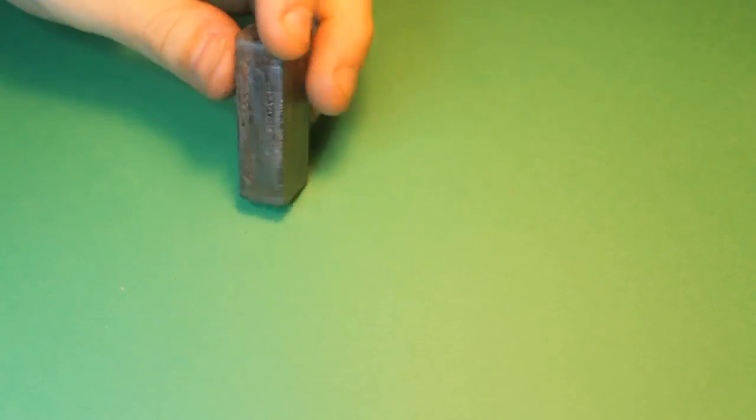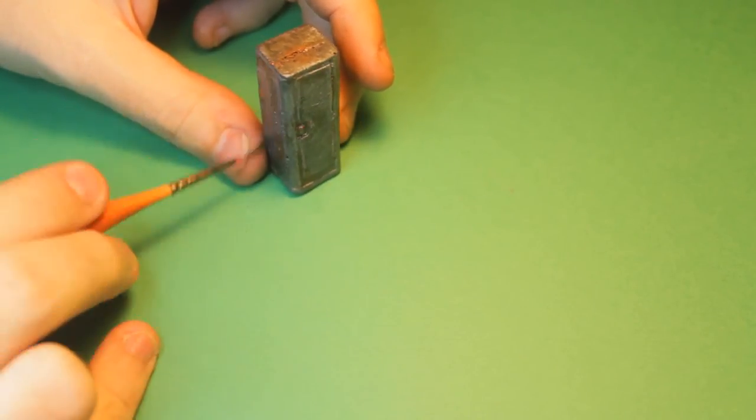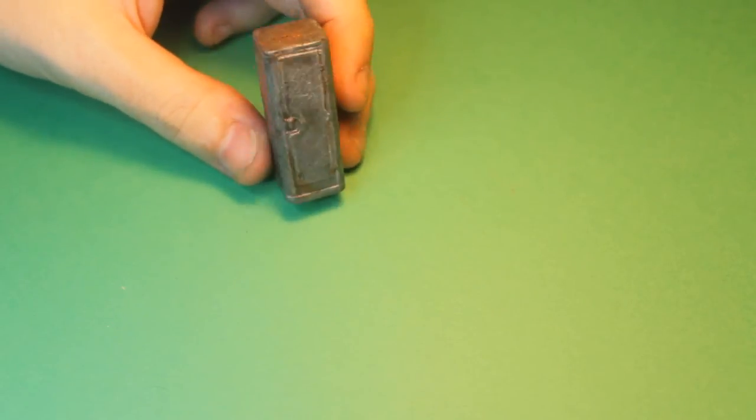Gloss varnish, and especially where the rust is, a few spots of matte varnish. And then we're going to see what they look like.